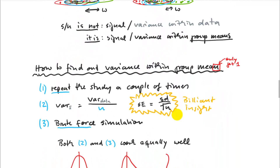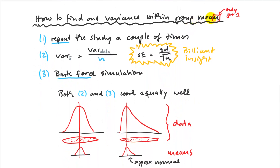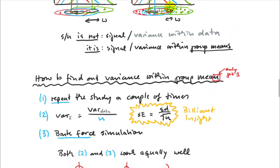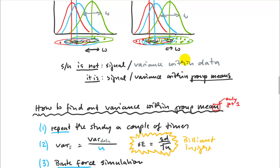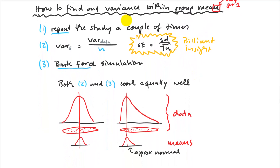So the signal-to-noise ratio is not signal to variance within the data, but to variance within group means. That poses a slight problem: how do we find the variance within a group mean if I only have one mean for my data? One option would be to repeat the study a couple of times — each time you'd get slightly different group means, giving you a sense of the variance. But one British statistician had a brilliant insight: you can estimate the variance of your group means from the variance of your data, as variance divided by n. That formula gives you the variance of the means — usually expressed as standard deviation, giving you the standard error.